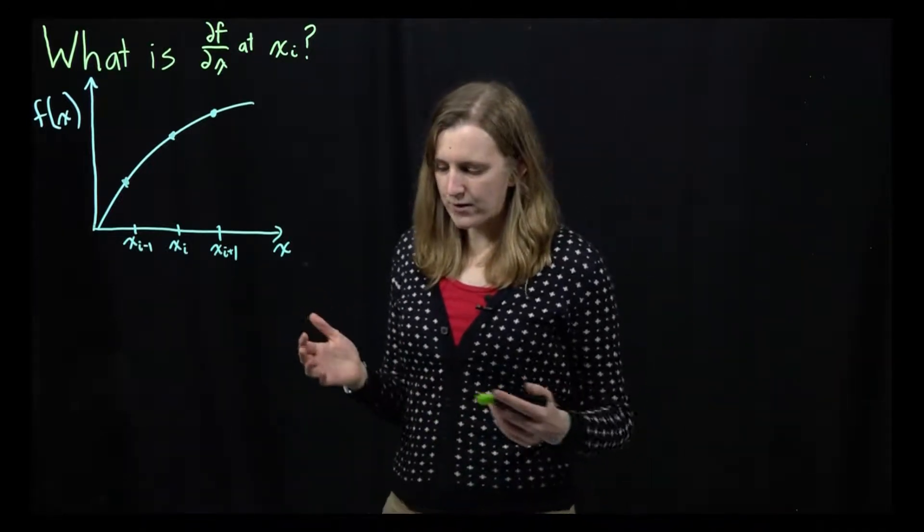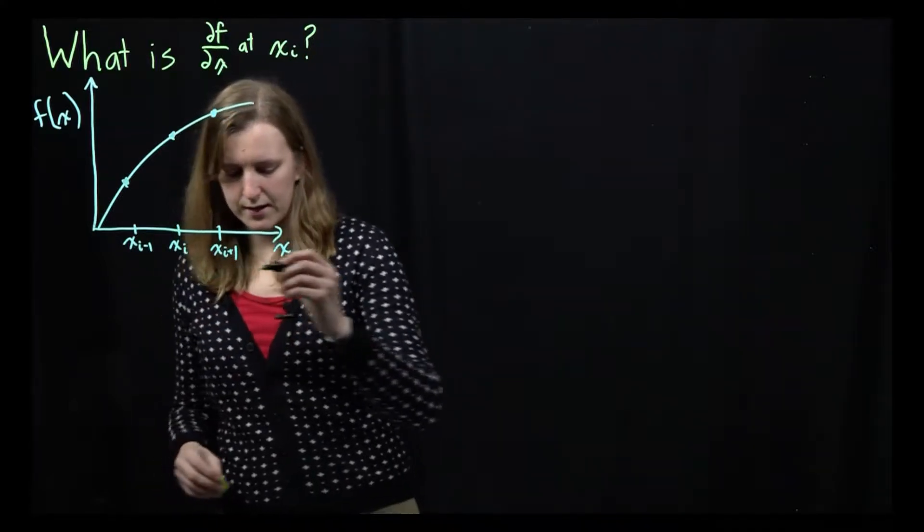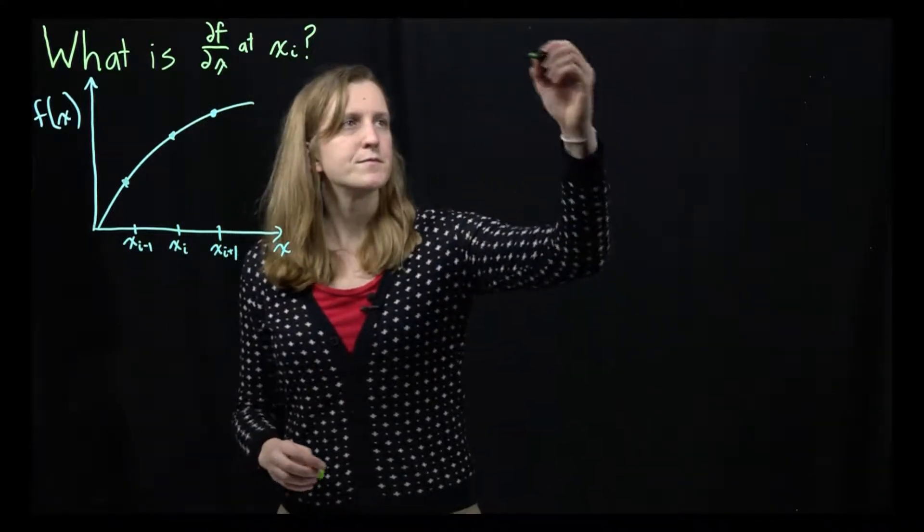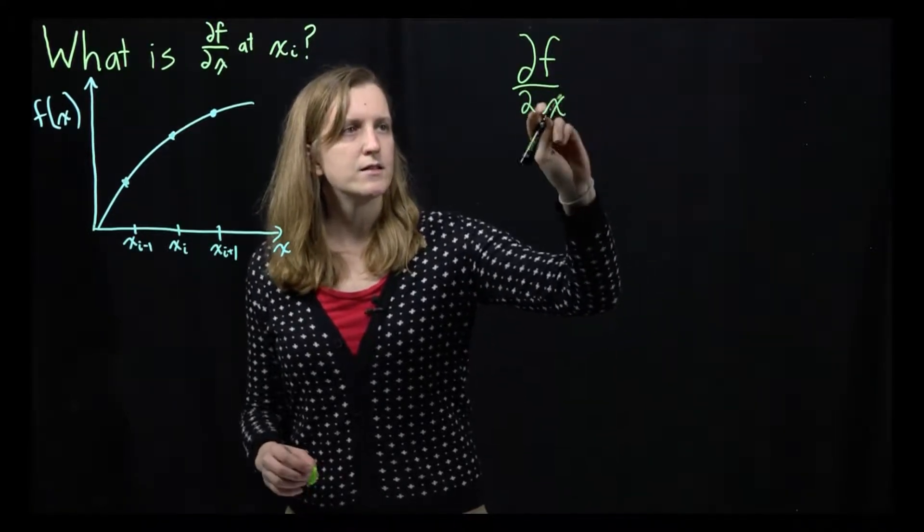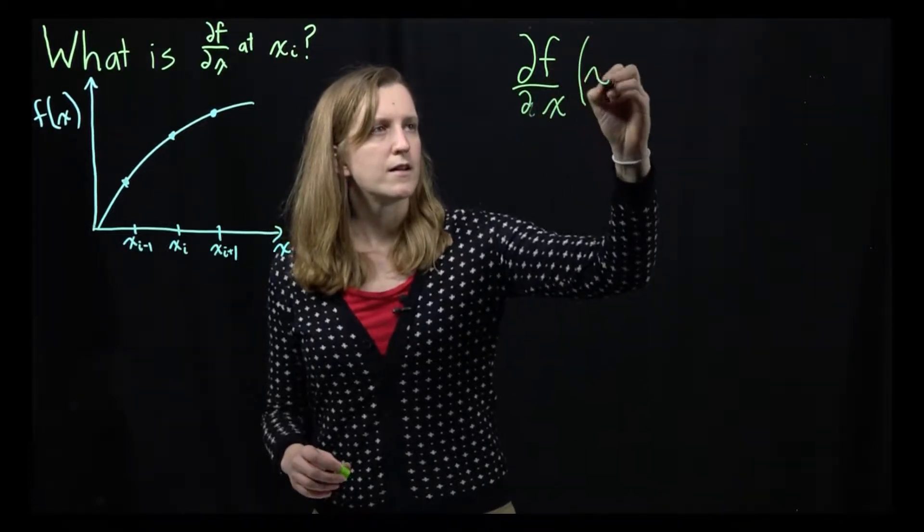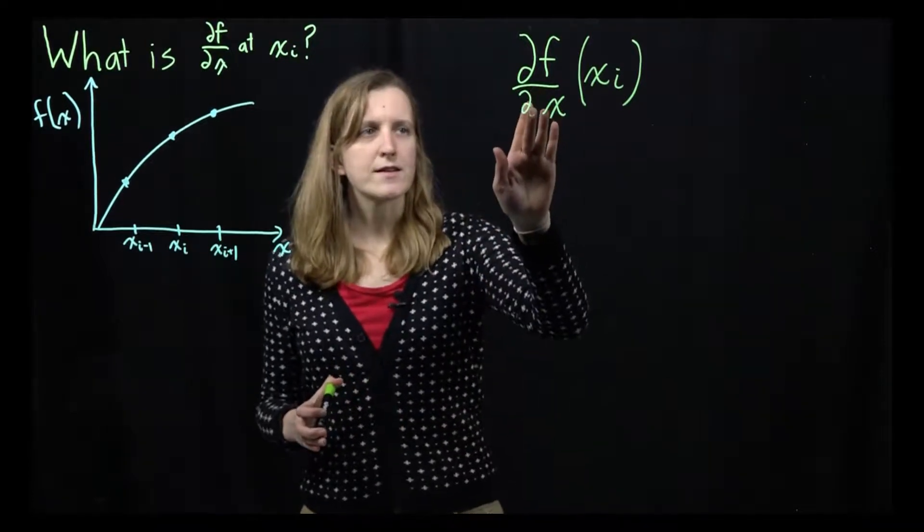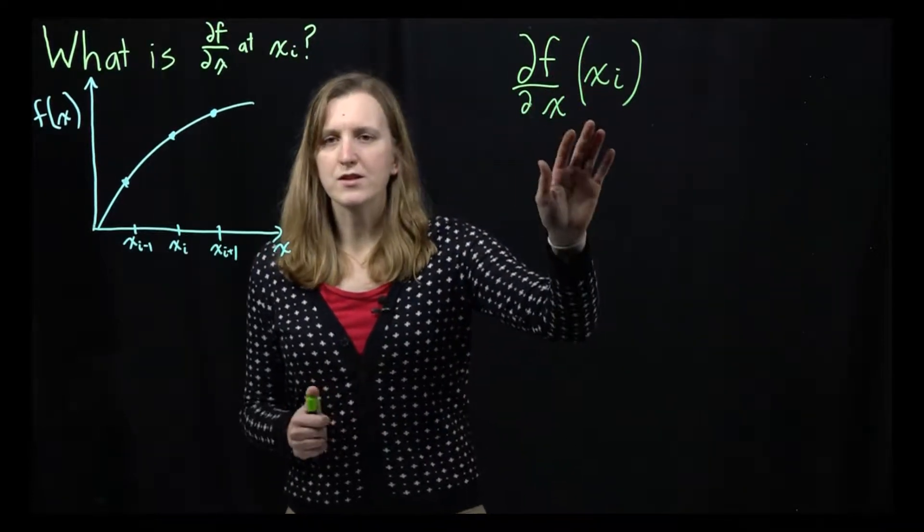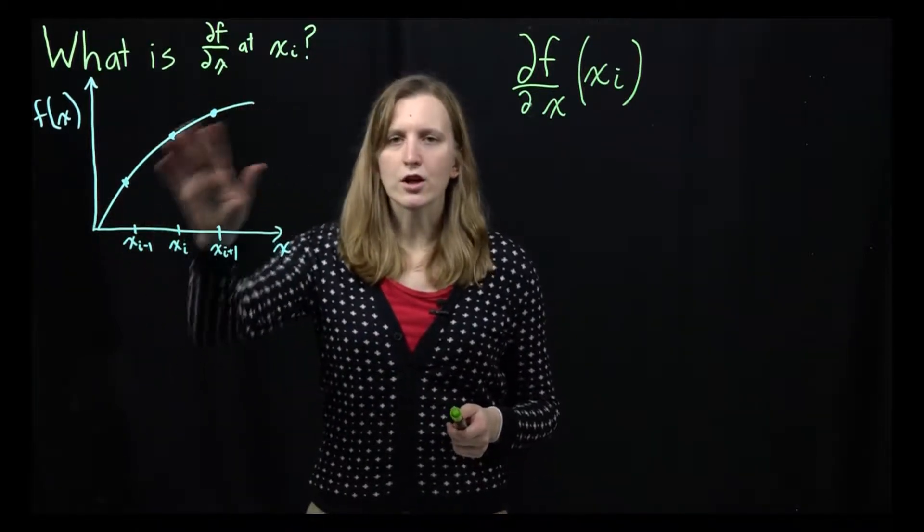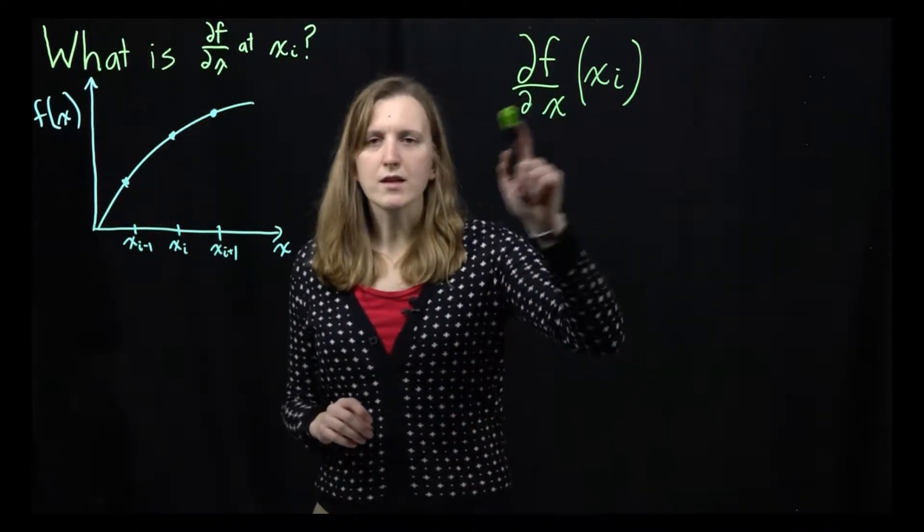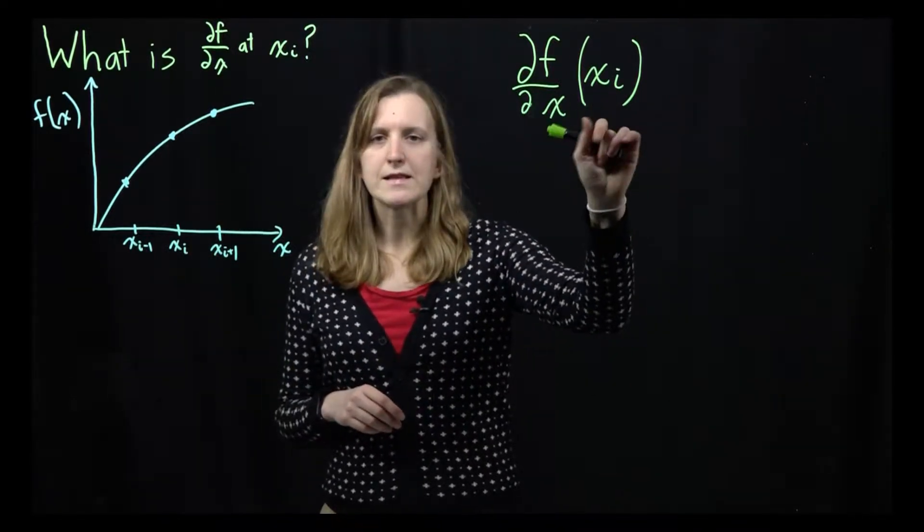So the way we can write it down is we're first going to write it down, so this is going to be df/dx at xi. And so what this is saying, it's saying how does our function f change as we change our variable x. So you can see here in our curve, how does this change? This is just going to be our slope. It's going to be the slope of the line. But then we are going to want it at this specific point.